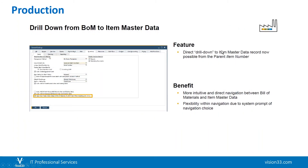You can also drill down from the bill of materials to the item master data. This direct drill down to the item master data record is now possible from the parent item number, in place of going directly to the bill of materials. There is an option to set which way you want to navigate, giving more intuitive and direct navigation between bill of materials and item master, with more flexibility due to the system prompt and navigation choices.